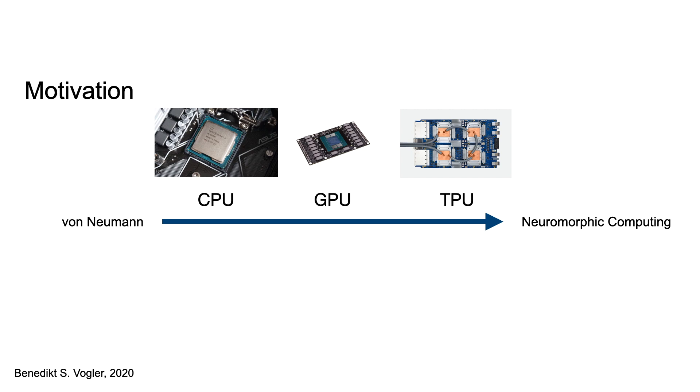Modern computers are using the von Neumann architecture, which separates compute and memory. With GPUs, graphics processing units, and TPUs, tensor processing units, we see a trend towards more neuromorphic hardware.